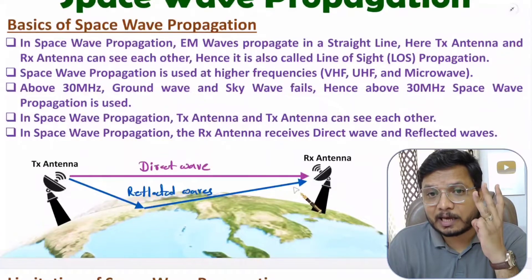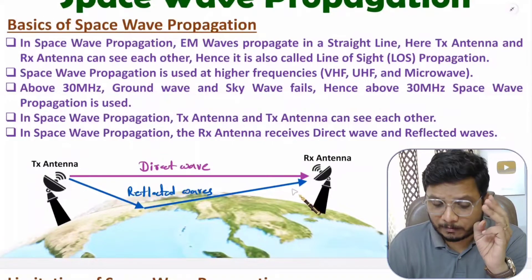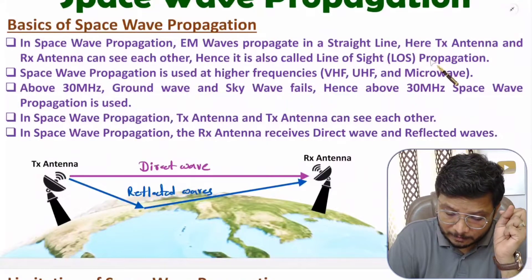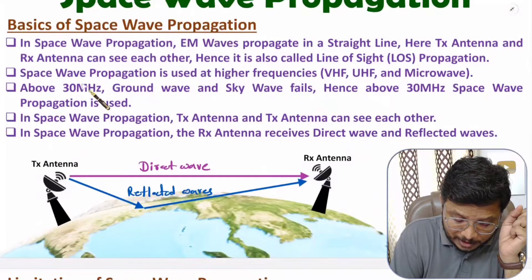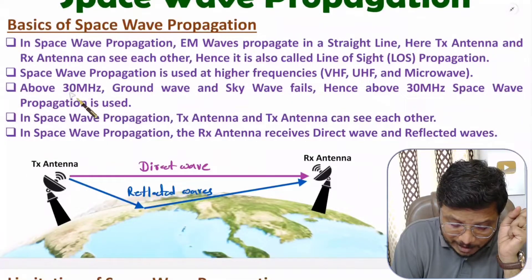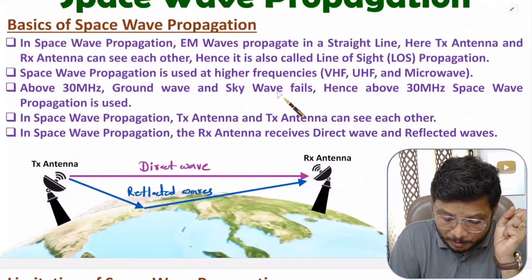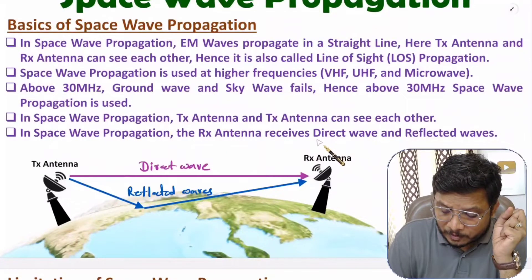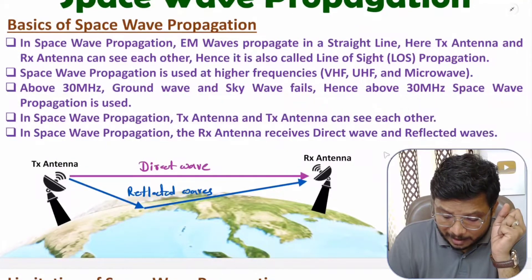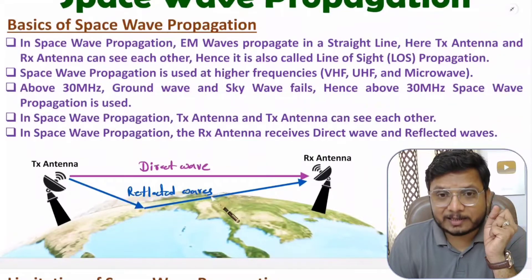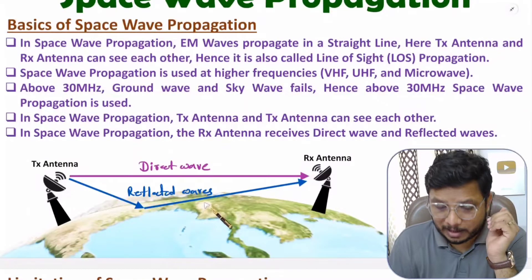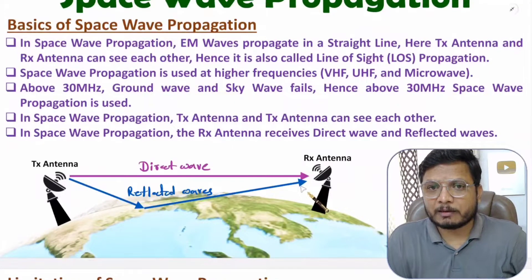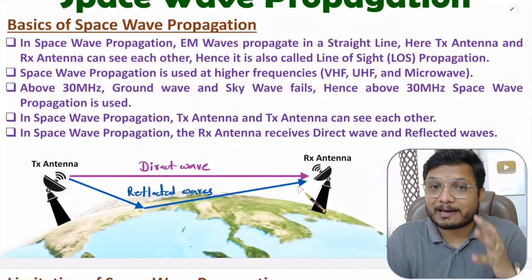There are three key points to note. First, space wave propagation happens in a straight line, which is why it is known as line of sight propagation. Second, it happens above 30 megahertz only, since below that we have ground wave and sky wave propagation. Third, we receive both direct and reflected waves, where reflected waves create issues at the receiver side, though a RAKE receiver can be used to mitigate those issues.